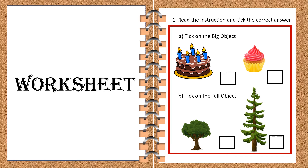I am sure we all must have understood the concepts very clearly. Now let's start the activity. Our first activity: we have to read the instructions and tick the correct answer. First one says tick the big object. We can see a brown cake and a pink cake — which one is bigger? Correct! Brown cake is big. The next images are of trees — tick on the tall object. Which one is taller? The right side tree is taller.